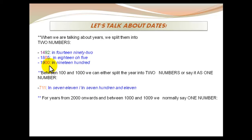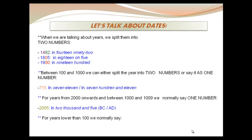What about numbers between 1000 and 1009, and 2000 onwards? These are said as a single number — for example, 2005 is said as two thousand and five. The final rule is that if the year is lower than 100, we normally must say 'year' — for example, year 43. We include the word 'year' in order not to confuse this number with another kind of number.